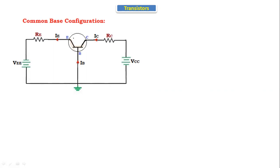The transistor is having three terminals: emitter, base, and collector. Out of these three terminals, as the base is connected to ground and it is common to emitter and the collector, it is called as a common base configuration.